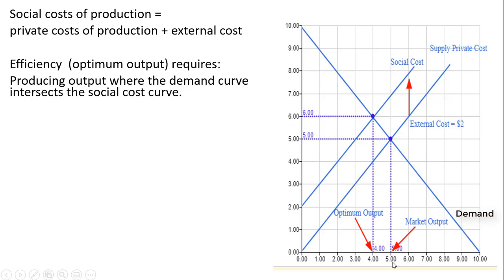But in the presence of a negative externality, that is not efficient. In this example, the negative externality brings about an external cost equal to $2 per unit. So every time a firm produces a unit, it does perhaps $2 of environmental damage.